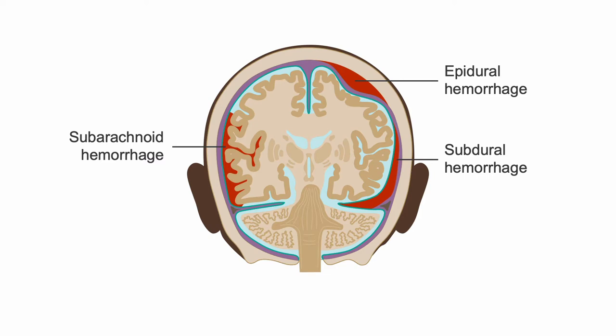Spontaneous subarachnoid hemorrhage is usually secondary to an aneurysmal rupture — we'll cover that in a later chapter. Subdural and epidural hemorrhages are usually due to trauma, and we'll cover those in another chapter.